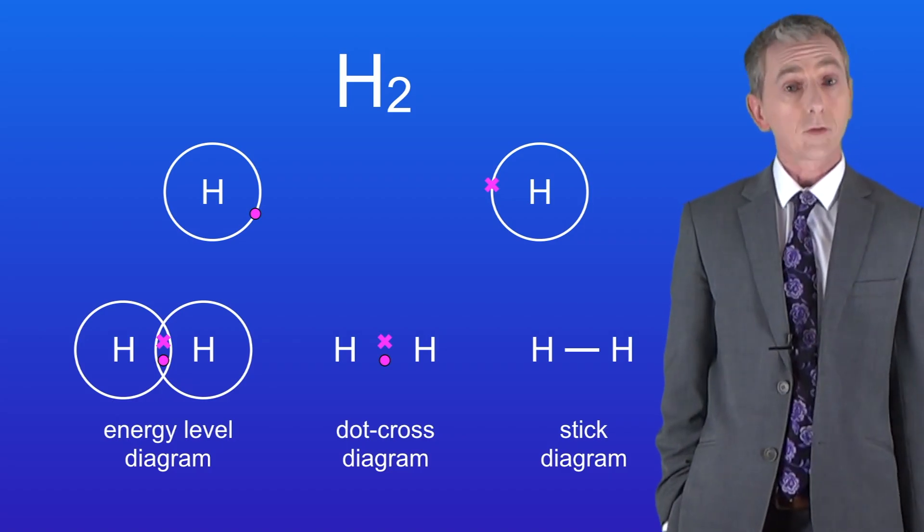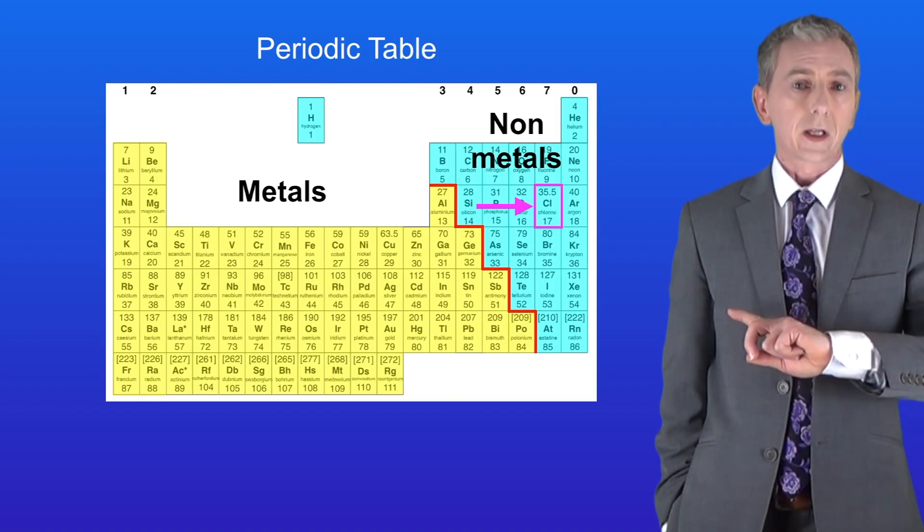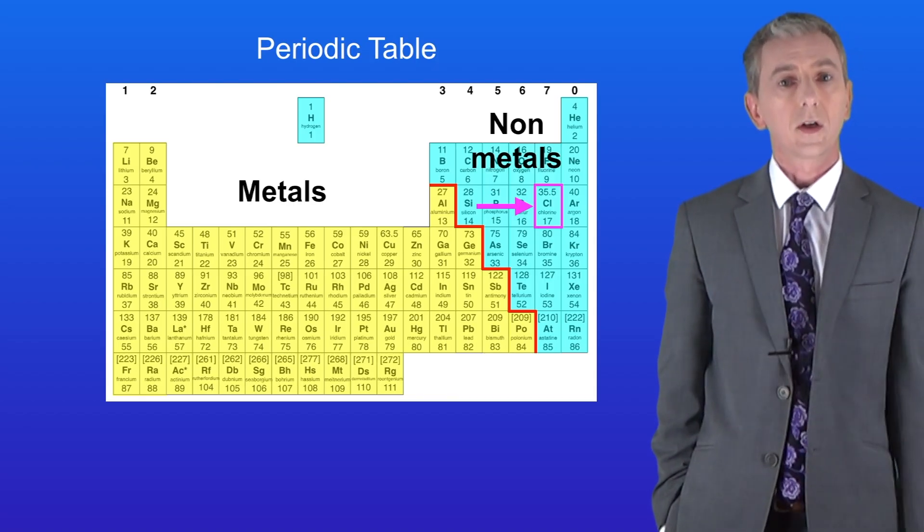Okay so that's the hydrogen molecule. Let's move on to a slightly more complicated molecule and this is the chlorine molecule Cl2. Here's the element chlorine in the periodic table and you can see that it's a nonmetal.